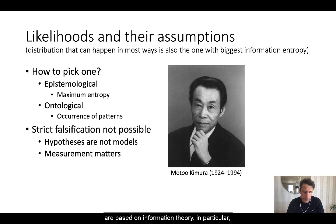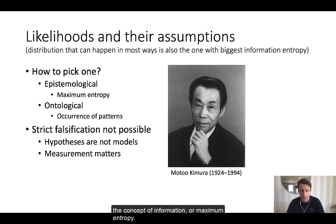Epistemological arguments are based on information theory, in particular the concept of information or maximum entropy. We want to pick a distribution that will allow the data to tell us its story. In short, we want the distribution that has the maximum entropy given our data.